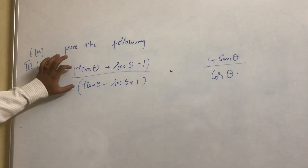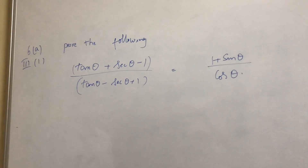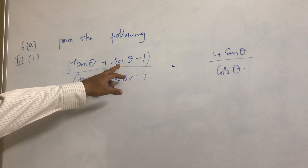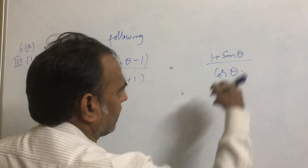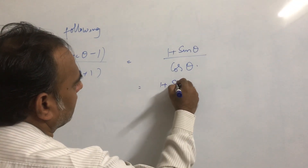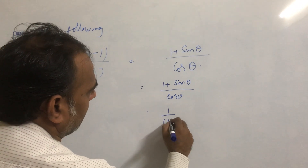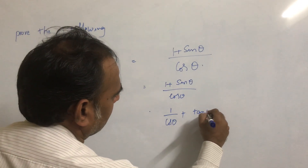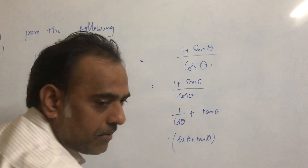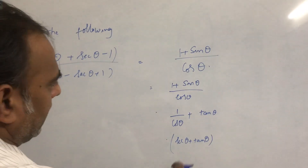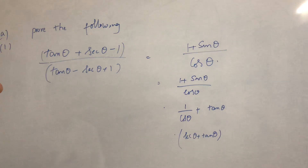Just by looking at this problem, the first thought is we need to expand tan θ as sin θ / cos θ and sec θ as 1 / cos θ. Let us take the RHS — what is RHS? (1 + sin θ) / cos θ. If we expand this, it becomes 1/cos θ + tan θ, which can be written as sec θ + tan θ.